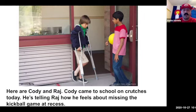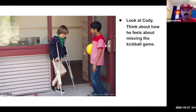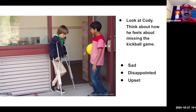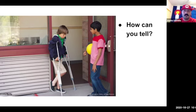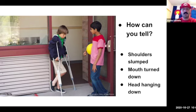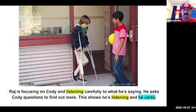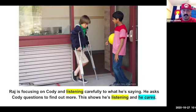Here is Cody and Raj. Cody came to school on crutches today. He's telling Raj how he feels about missing the kickball game at recess. Look at Cody and think about how he feels about missing the kickball game — this is where you need to be that feelings detective. How do you think he feels? Sad? Disappointed? Upset? His shoulders are slumped, his mouth is turned down — we call that a frown — and his head is hanging down. So his body language is really telling us how he feels. Raj is really focusing on Cody and listening carefully to what he's saying. He asks Cody questions to find out more. This shows he's listening and he cares — he's giving Cody his full attention.